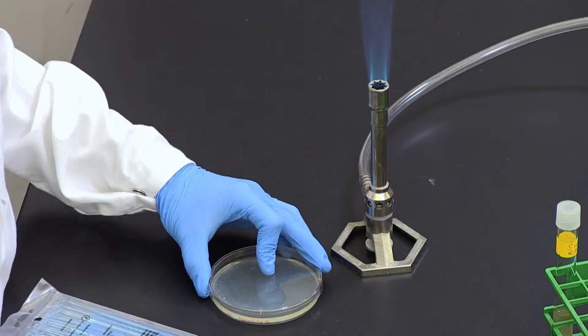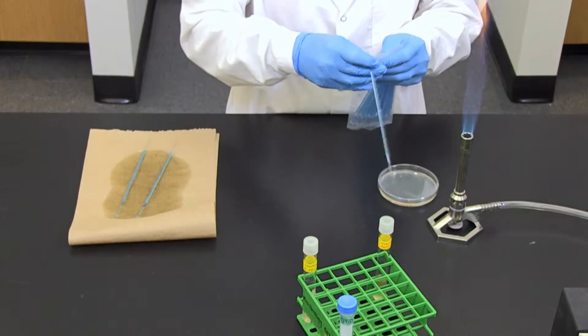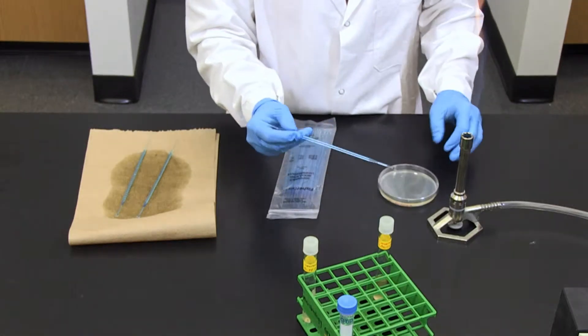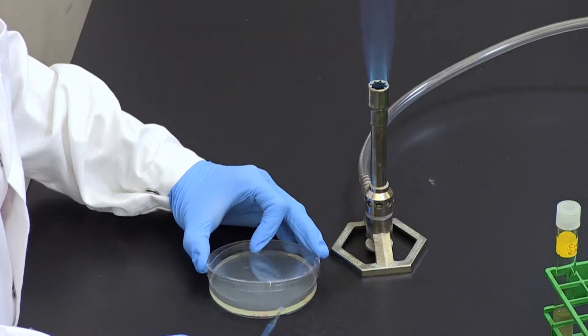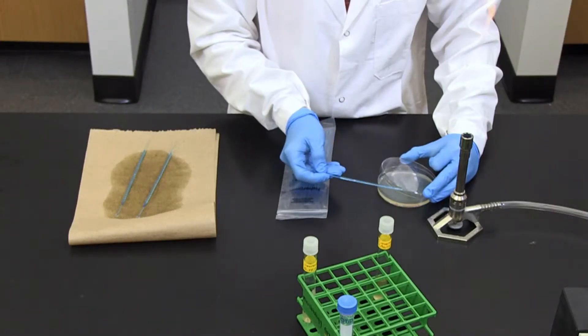Then, rotate the plate 90 degrees while keeping the plate closed, and streak area 2 several times back and forth with a sterile inoculating loop, hitting the first streak a few times.